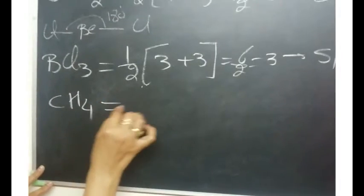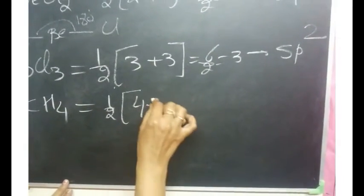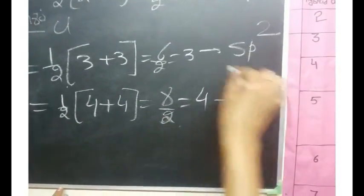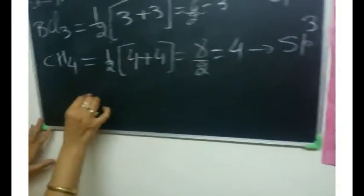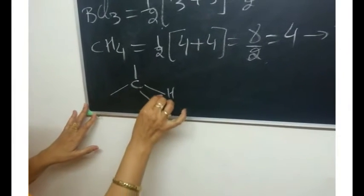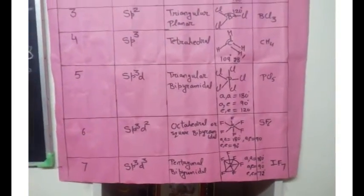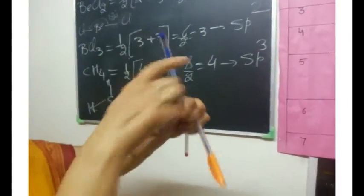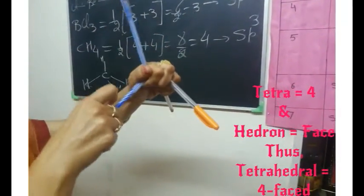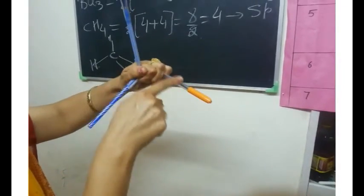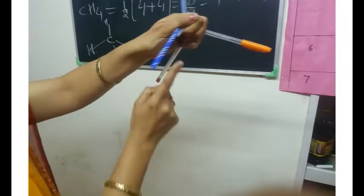Next is methane, CH₄. Carbon has 4 valence electrons and 4 surrounding monovalent hydrogen atoms. The answer comes out to be 4, meaning SP³ hybridization. The atoms are arranged so that the electron clouds repel one another the least, giving a bond angle of 109°28'. Using pens: this is your carbon, and these are 4 hydrogens. Every bond angle is 109°28', and this 3-dimensional shape is called tetrahedral geometry.